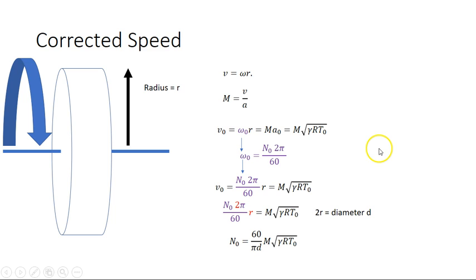Alright, so the RPM at any other condition would be this, multiplied by whatever temperature would be at that condition.